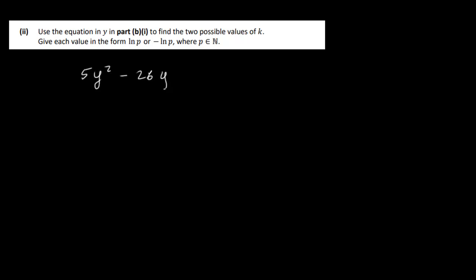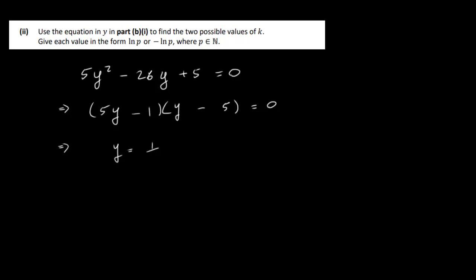Using the equation 5y² − 26y + 5 = 0, we factorize: (5y − 1)(y − 5) = 0. Solving gives y = 1/5 or y = 5. We need to find two possible values for k in the form log p or −log p.